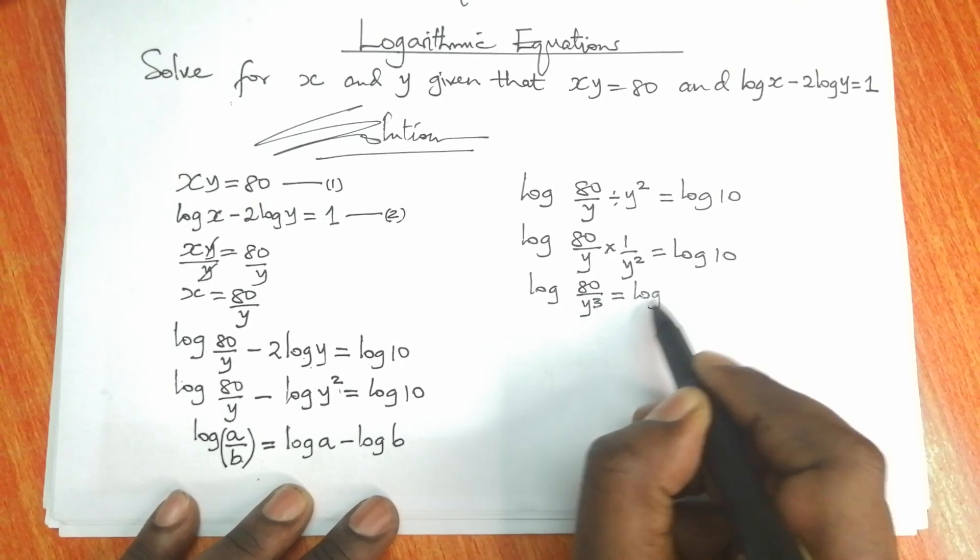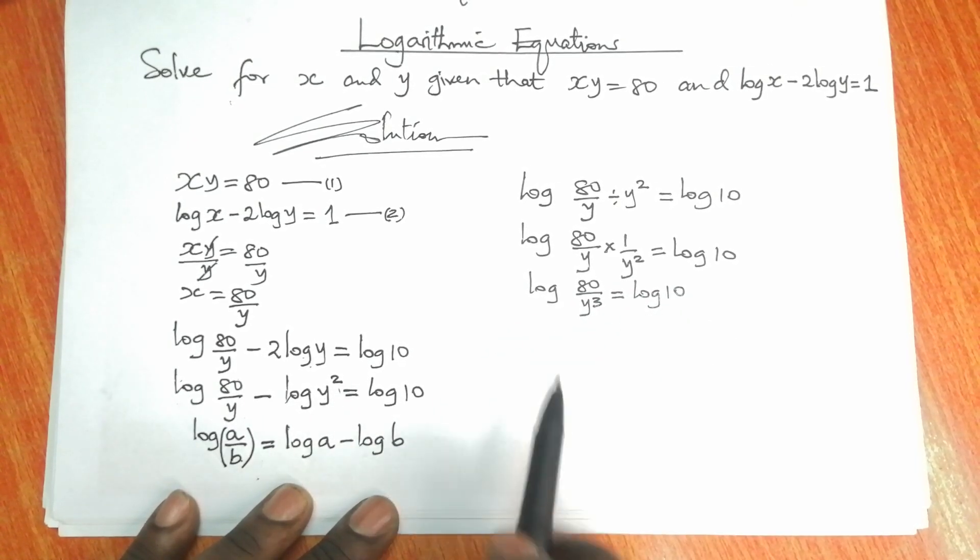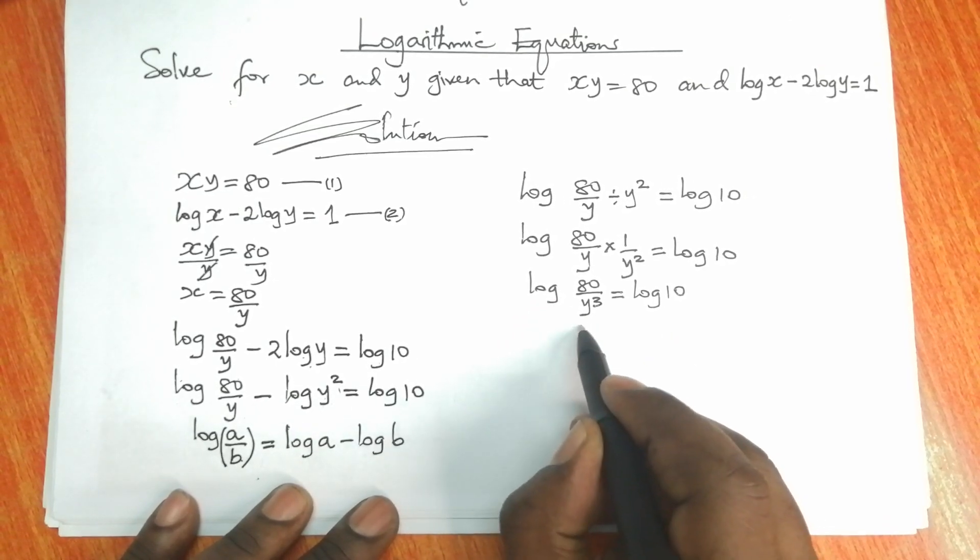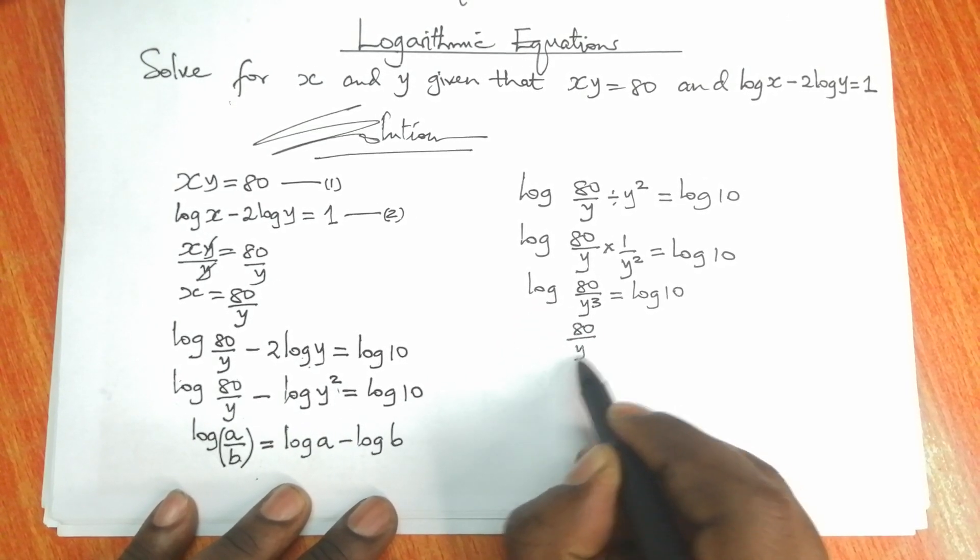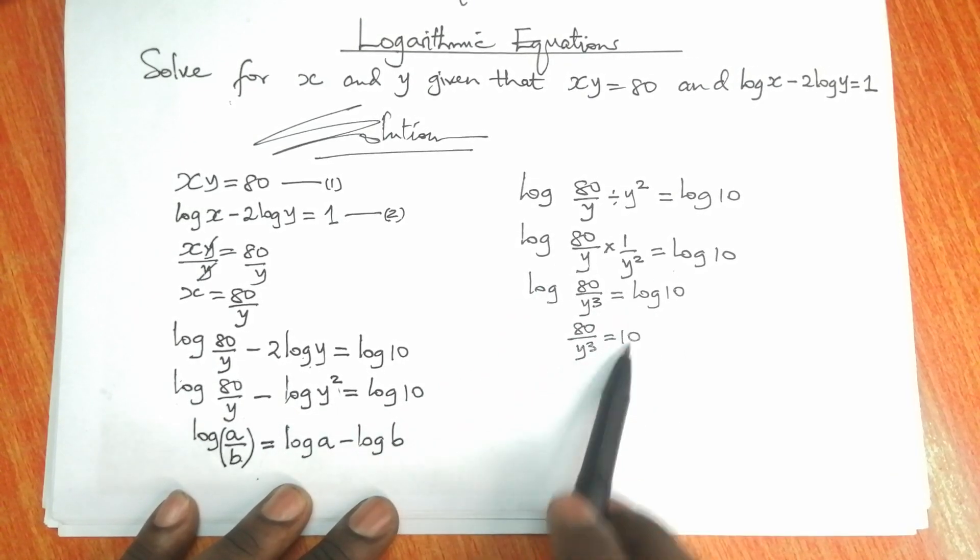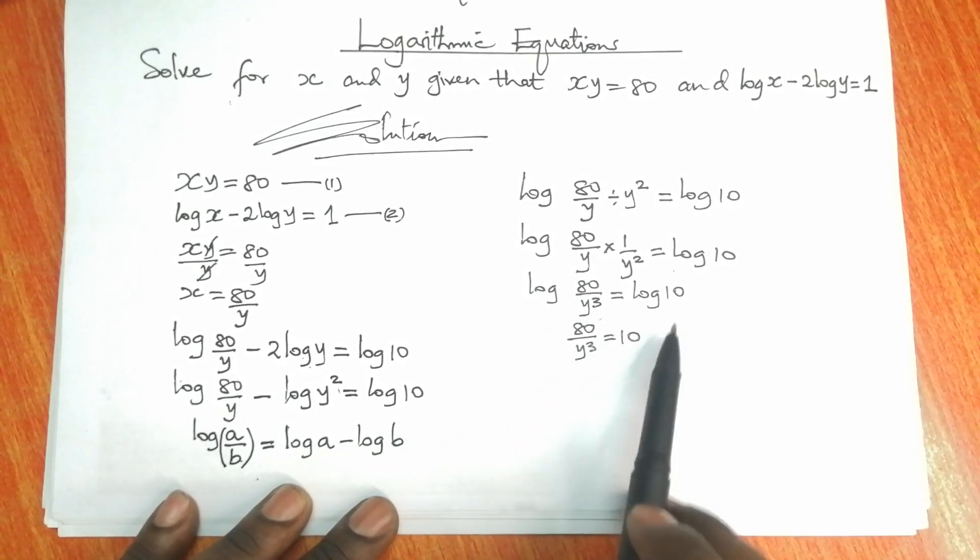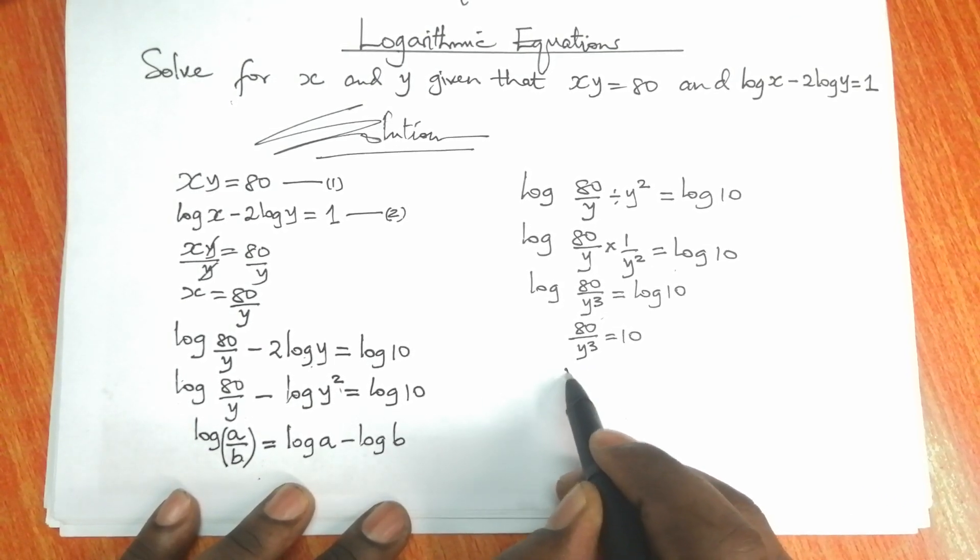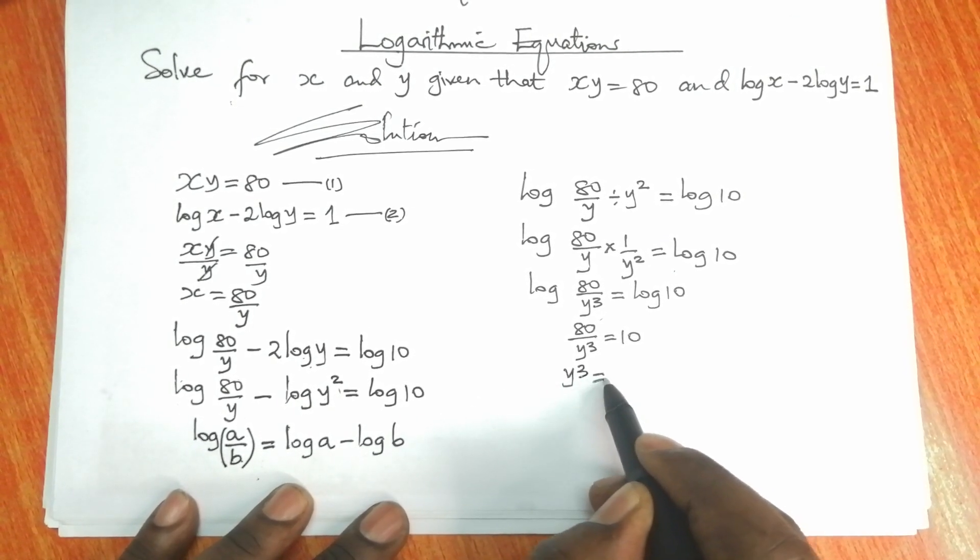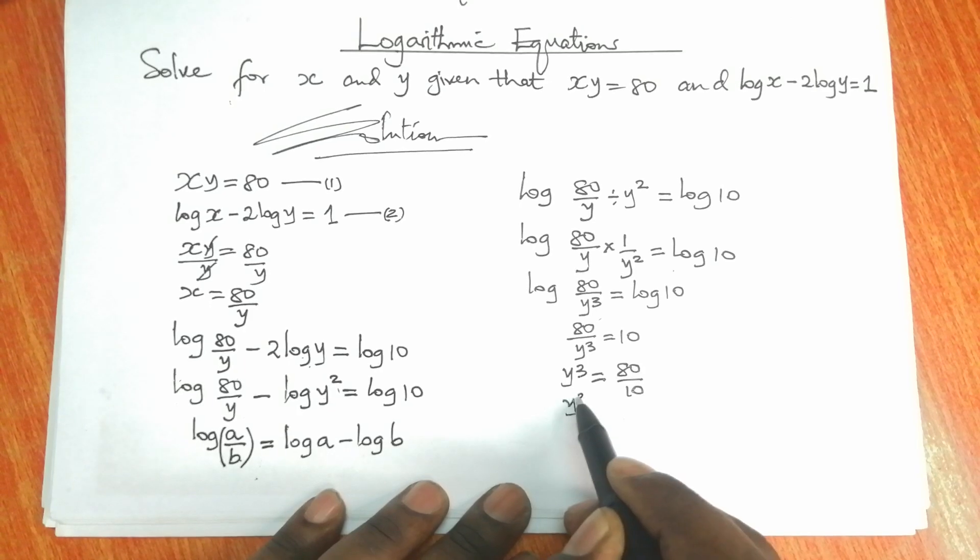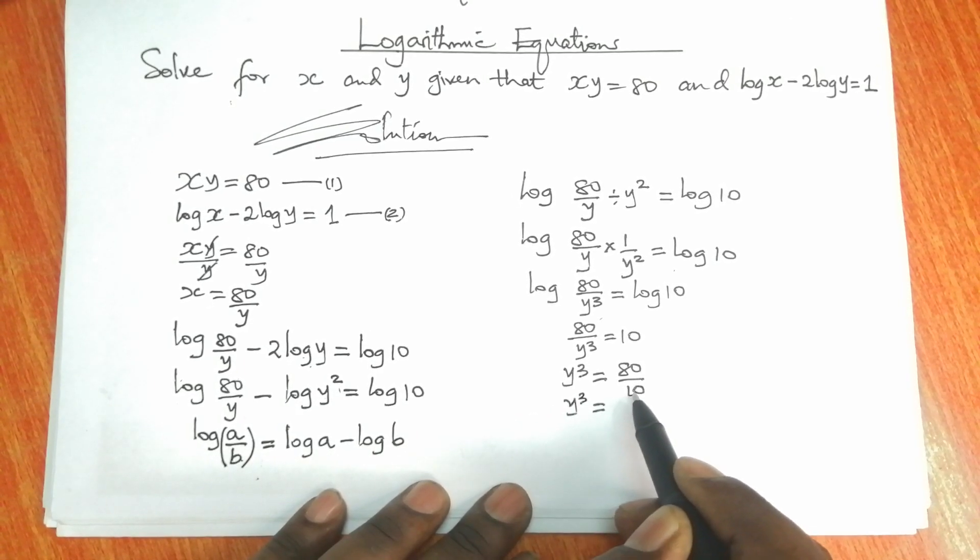Then we can conclude that 80 over y cubed would be equal to 10. We can remove the logarithms now and use the numbers. And y cubed will be given by 80 divided by 10, and therefore y cubed is 8.